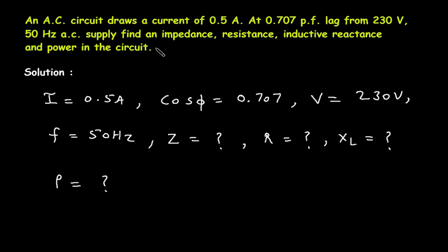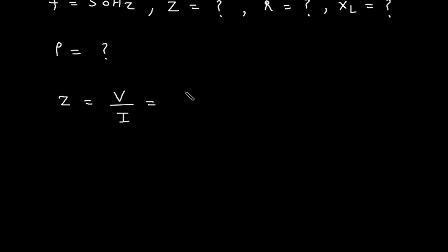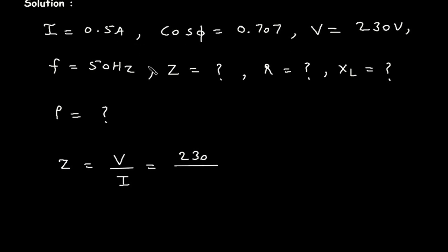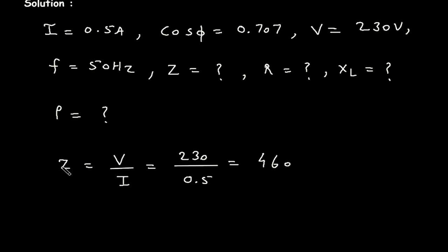First, we will find impedance Z. According to Ohm's law, Z equals V divided by I. The value of voltage is 230V and current is 0.5 Ampere, so Z equals 230 divided by 0.5, which gives 460. Therefore, Z is equal to 460 Ohm.